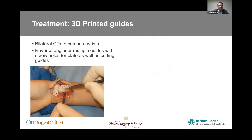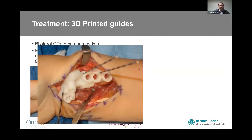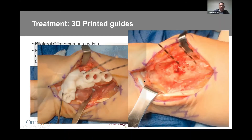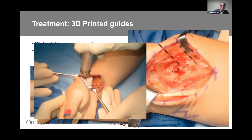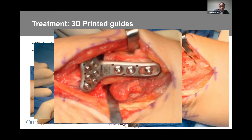Touching on 3D printed guides: you get bilateral CTs to compare your wrists, then have multiple guides reverse-engineered with the screw holes for your plate as well as cutting guides. You put on a guide first with screw holes for the shaft and distal part of your plate, drill the holes, then apply a guide over those K-wires and have a series of cutting guides to make your osteotomies. The idea is you just put the plate on the bone and your screw holes are already there, taking some of the work out of it.